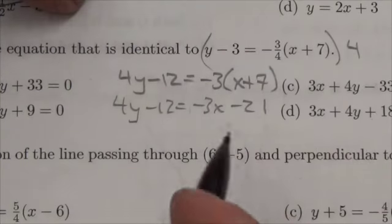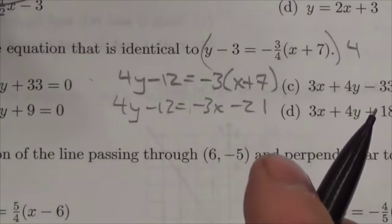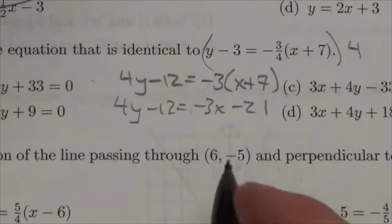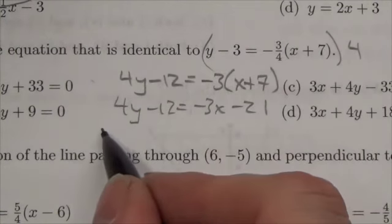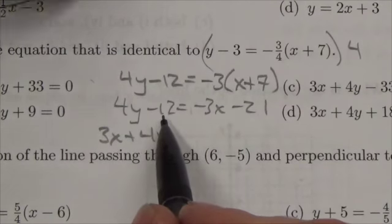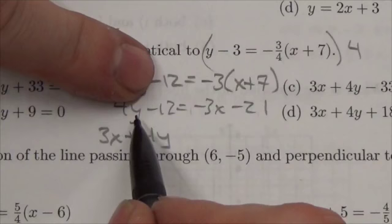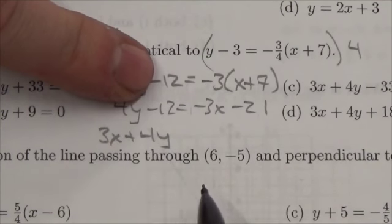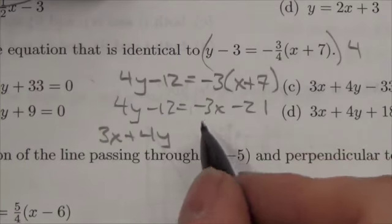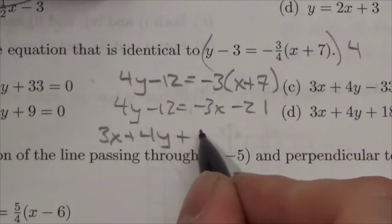And now to put this in general form, I need to have the coefficient of the independent variable, the x, to be positive. So I'm going to bring everything over to the left hand side. So 3x plus 4y. And then I've got this minus 12. But I'm going to add 21 to it. So 21 minus 12 is going to be 9.